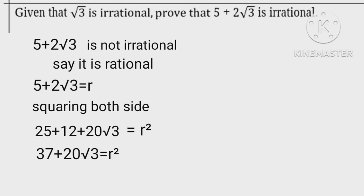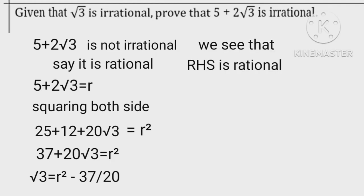Root 3 equals r squared minus 37 upon 20. We see that right hand side is rational whereas left hand side is irrational. As we know, irrational can never be equal to rational. Hence the given number 5 plus 2 root 3 is an irrational number.